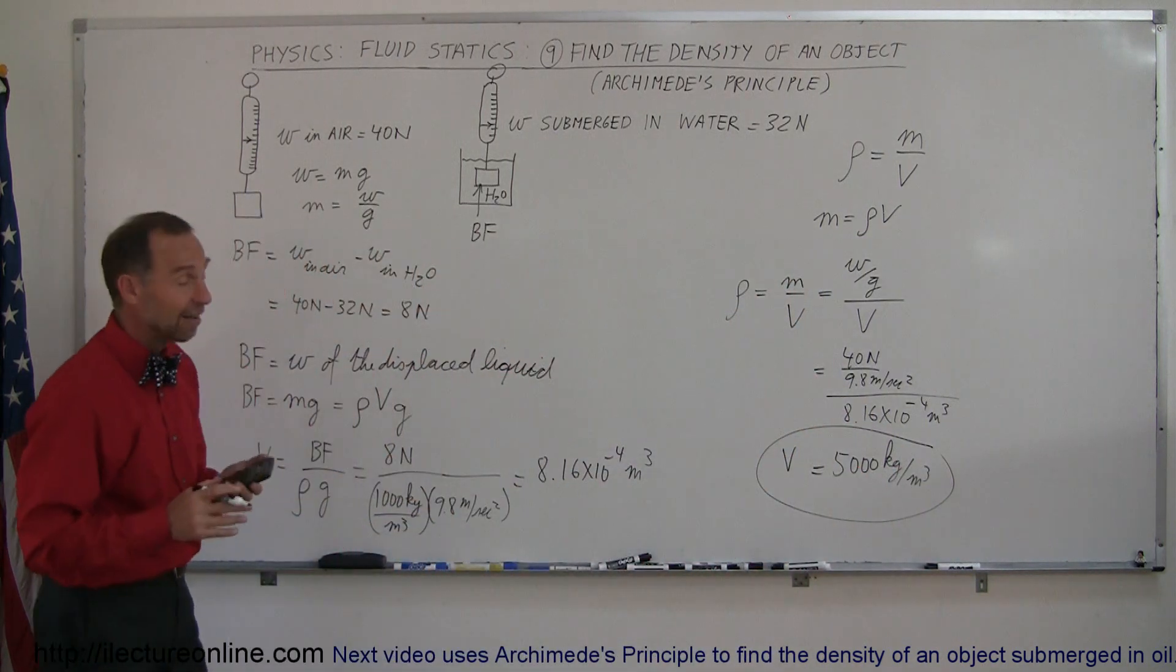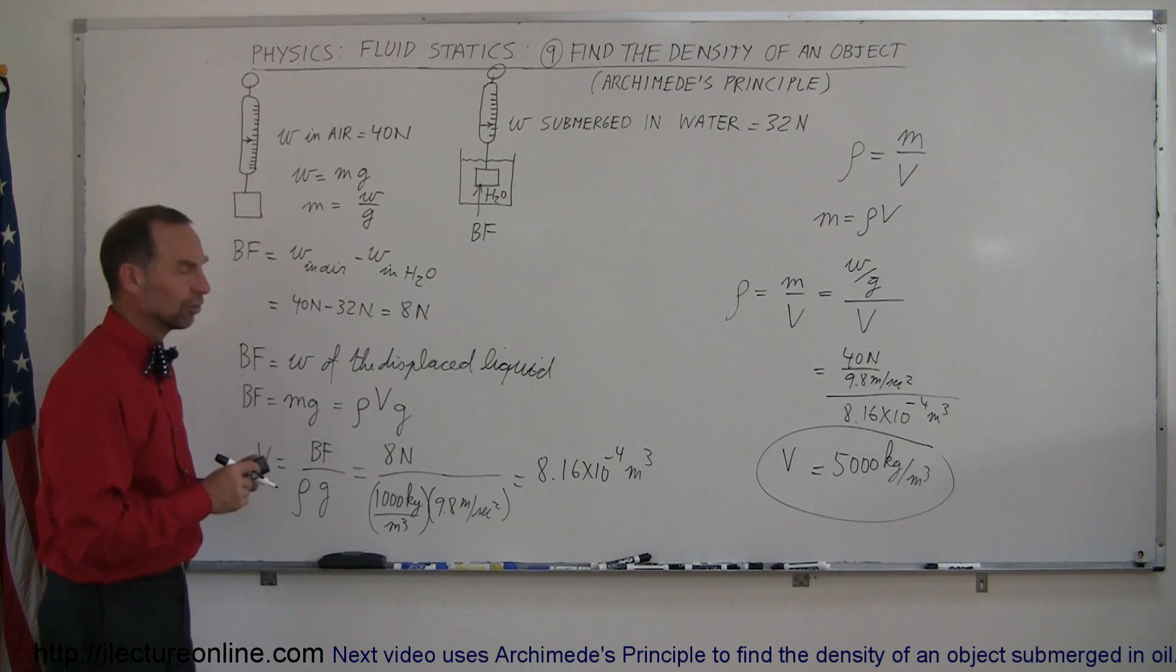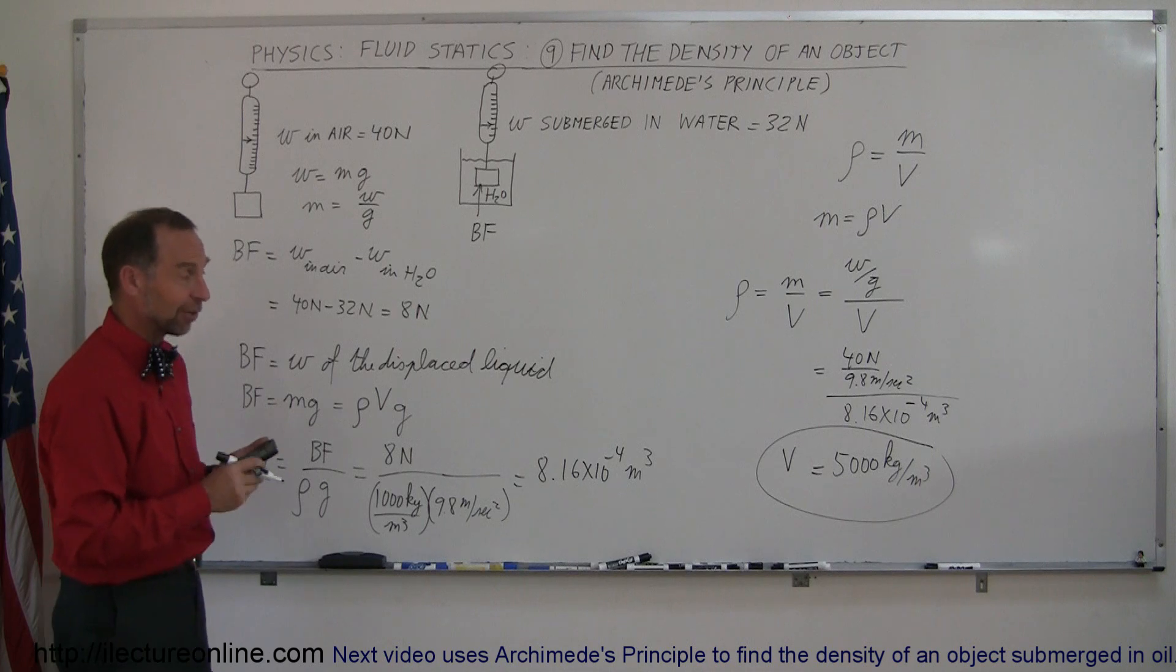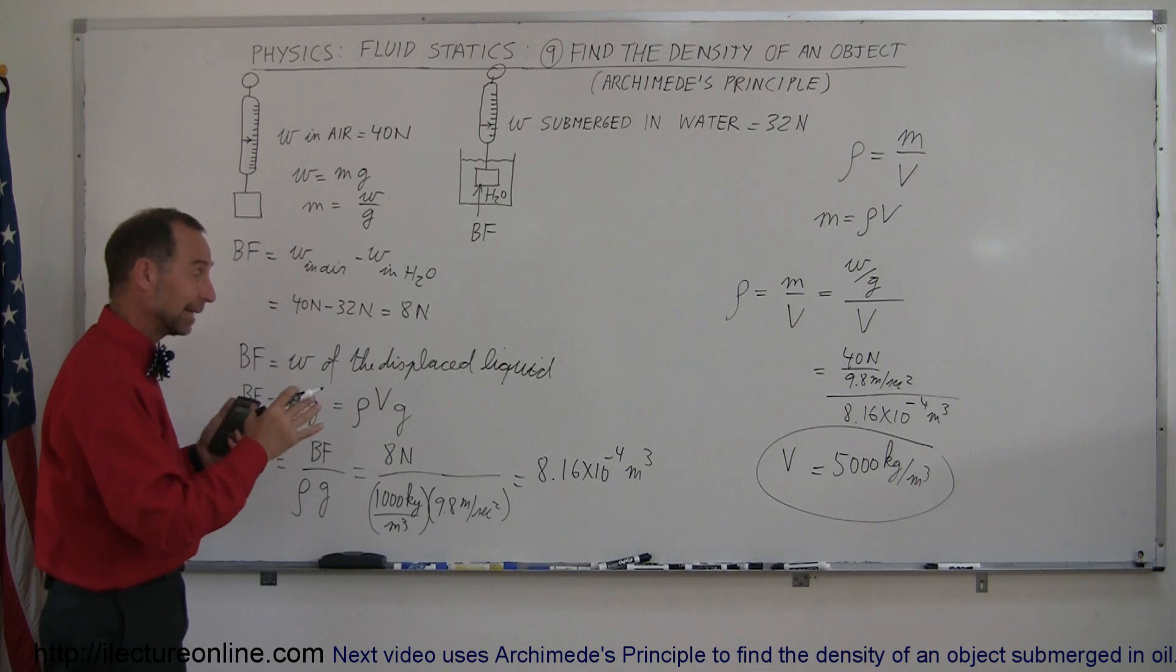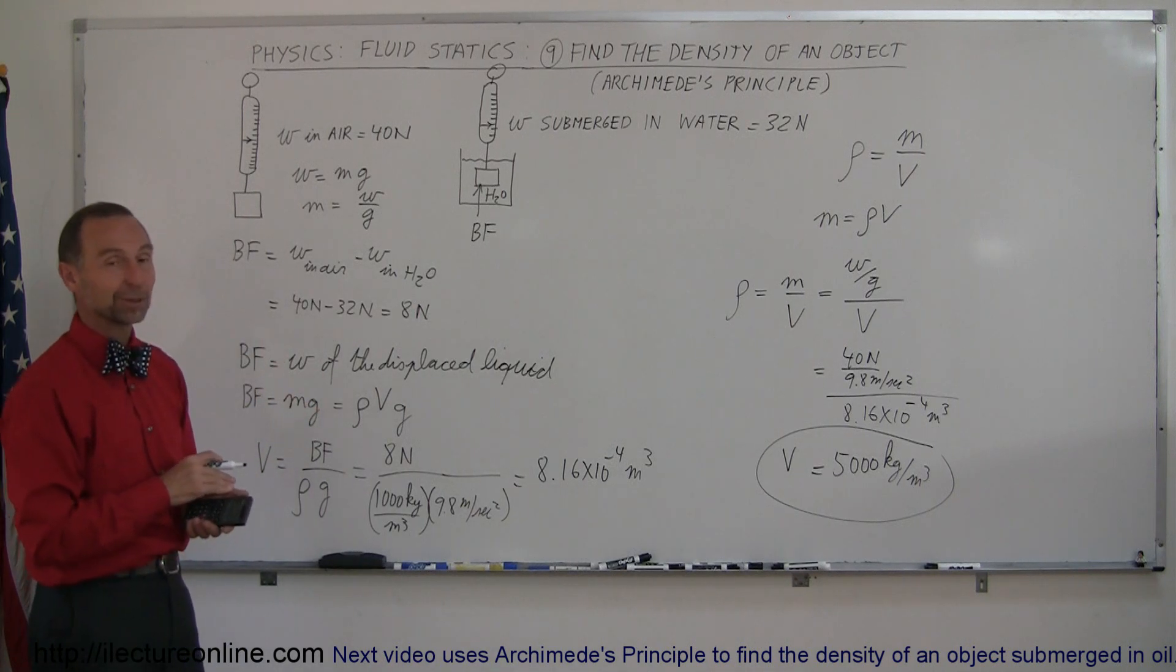So notice that that is 5 times the density of water. Now this is just a hypothetical question. I don't know if there's any object here that has a density of 5,000 kilograms per cubic meter, but that's the correct answer for this particular problem.